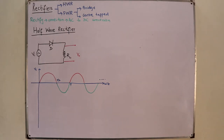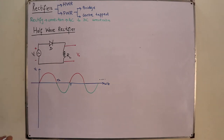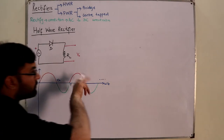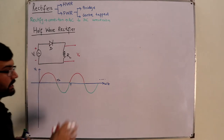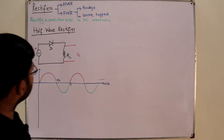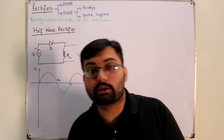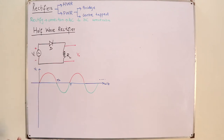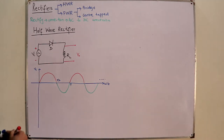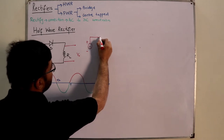In the first positive half cycle, the polarity is such that positive connects to the p-side and negative to the n-side of the diode, making it forward biased. For an ideal diode with no barrier potential, a direct p to positive and n to negative gives conduction. So for the positive cycle the diode equivalent circuit becomes a short circuit.